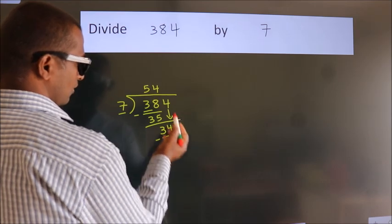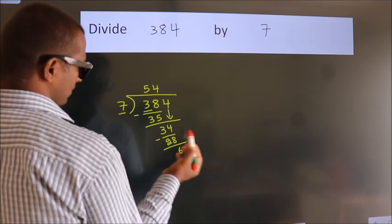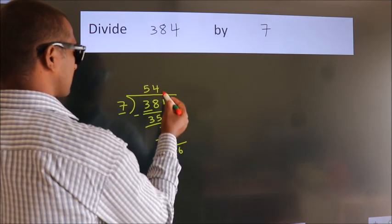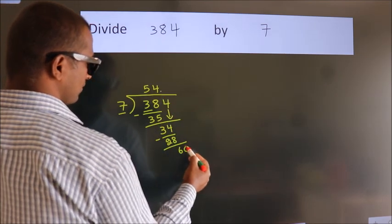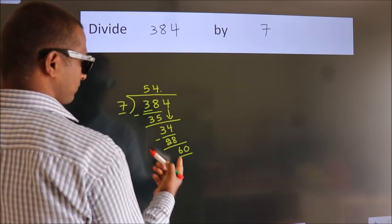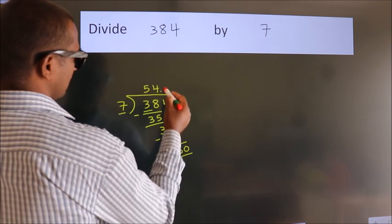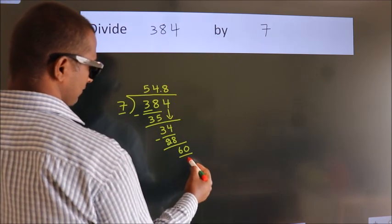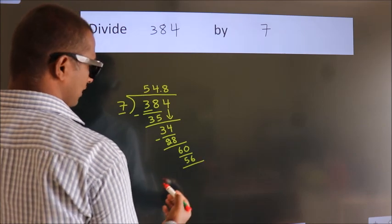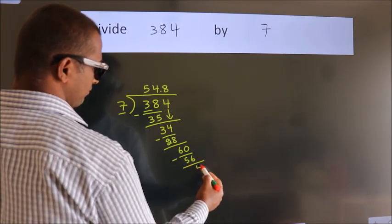After this, no more numbers to bring down. So what we do is, we put a dot and take 0. So 60. A number close to 60 in the 7 table is 7 eights, 56. Now we subtract, we get 4.